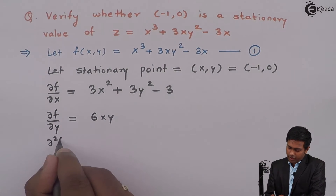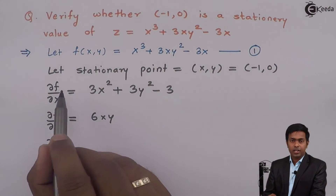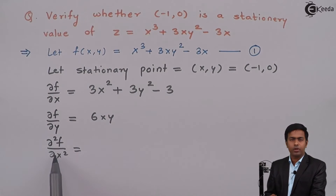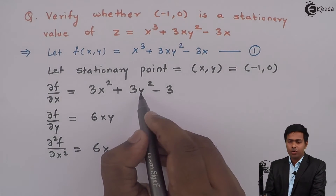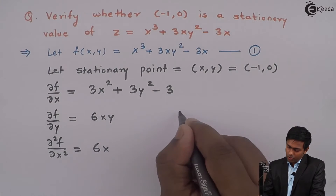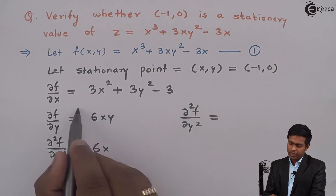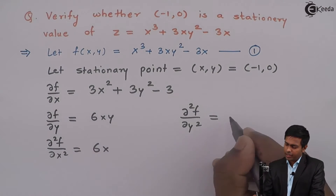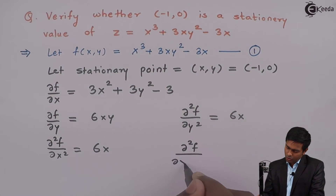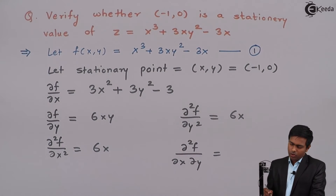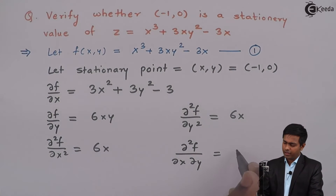Next, we will find out ∂²f/∂x². That is the partial differentiation of ∂f/∂x with respect to x. Here we will get 6x, and the rest are 0. Next, we will find out ∂²f/∂y². We differentiate ∂f/∂y with respect to y again, so we get only 6x. Next we will find out ∂²f/∂x∂y. We differentiate ∂f/∂y partially with respect to x, and here we will get 6y.